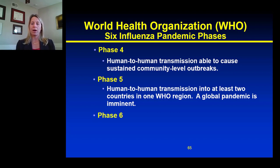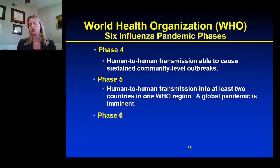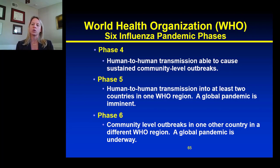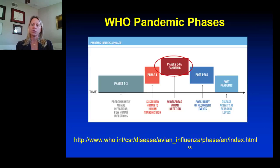Phase five is when you have continued human-to-human transmission, and now it's in at least two countries in one of the WHO regions. The WHO regions are geographic regions that the WHO uses to determine or consider spread of disease. Finally, the sixth phase is when human-to-human transmission is occurring in multiple countries in multiple regions, and hence you have a global pandemic.